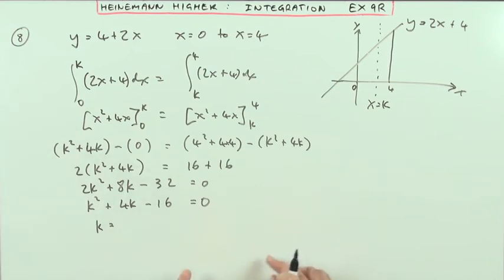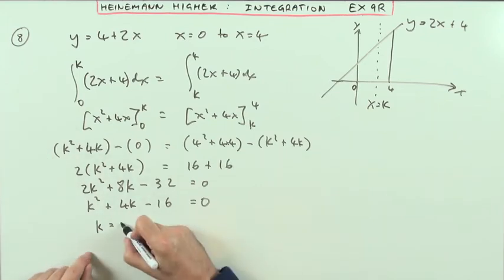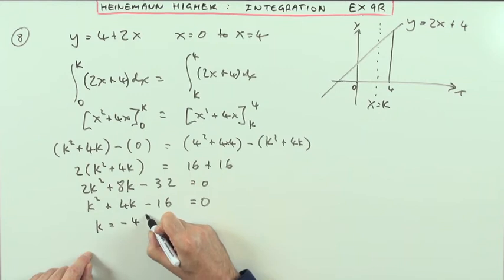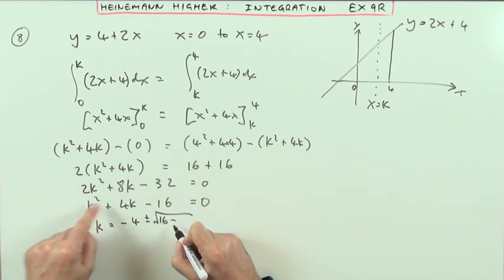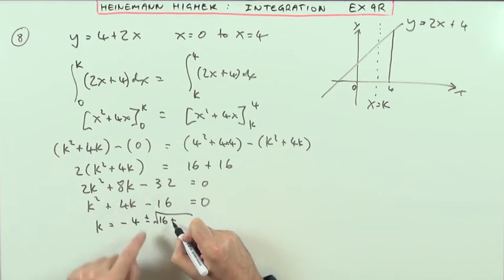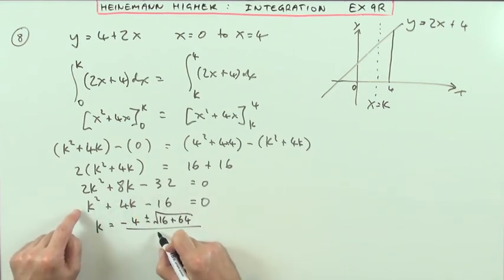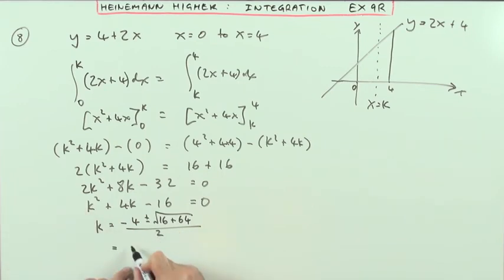So k is going to be the negative of the middle term plus or minus the square root of the middle term squared. So 4 times 4 is 16, minus 4 times that times that—it'll be plus 4 times 16, that's 64—over twice the first one, which is 2. So I've got negative 4 plus or minus the square root of 80, all over 2.